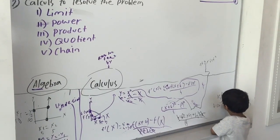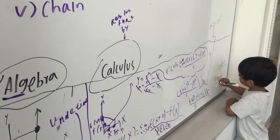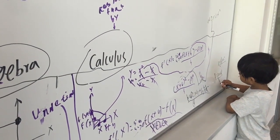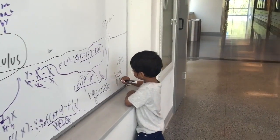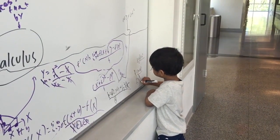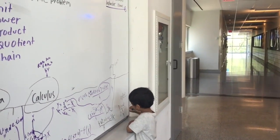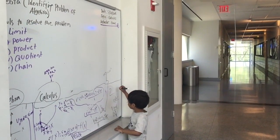2x plus h. Cancel the h's and you get 2x. As h goes to zero, you get 2x.